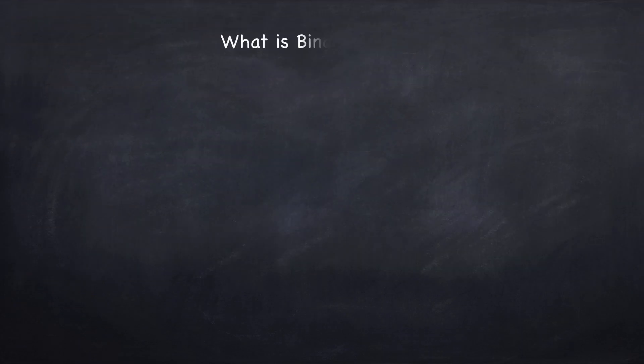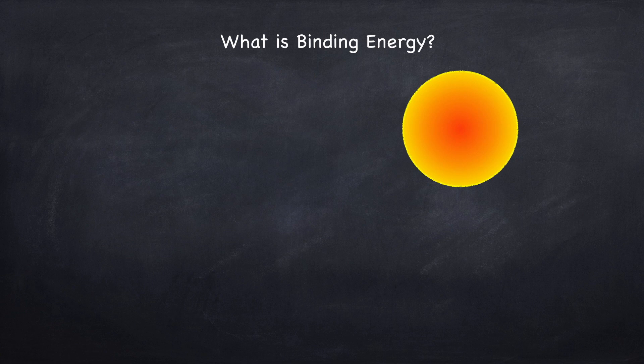When we talk about the energy of a star, what we really mean is its binding energy. So what is binding energy? Let's say we have a star, and infinitely far away there is some small volume of mass at zero temperature. We define this configuration to have zero energy — it has no gravitational potential energy and no thermal energy because it's at zero temperature. This is obviously not a realistic configuration; it's a theoretical construct which we define to have zero energy.